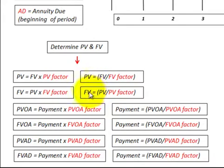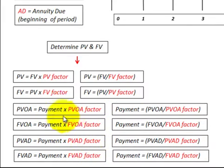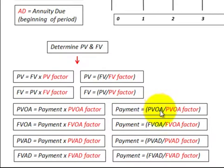The same is true for future value: it equals present value divided by the present value factor. For annuity payments, we take the payment times the factor. And if we want to determine the payment, we take the present value of the ordinary annuity and divide it by its factor.